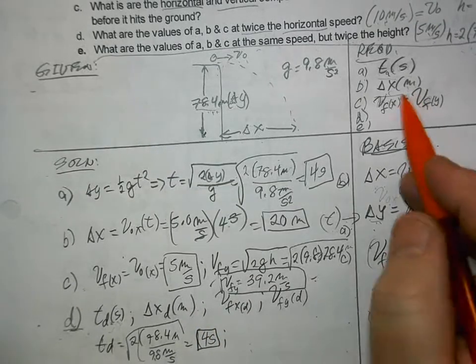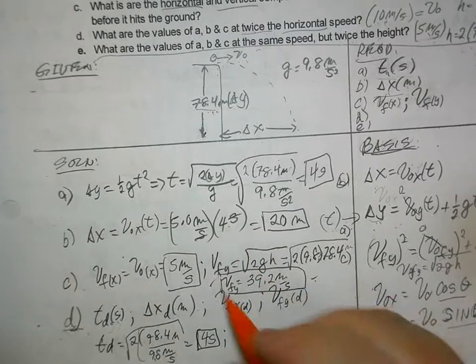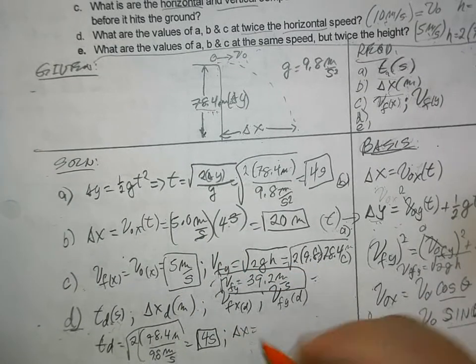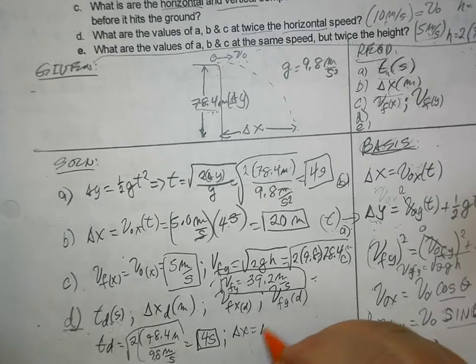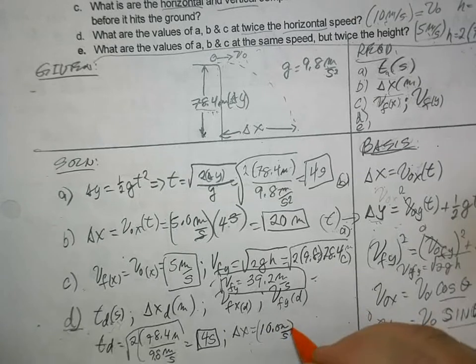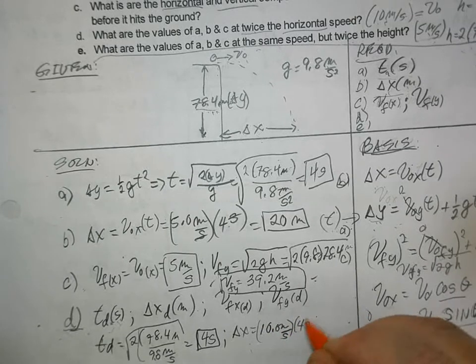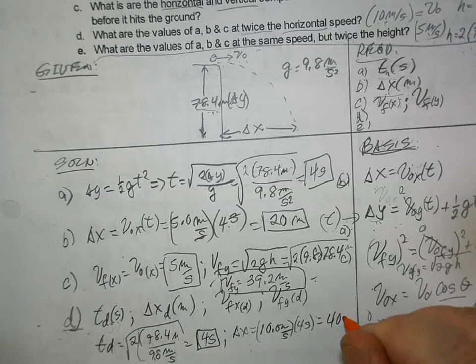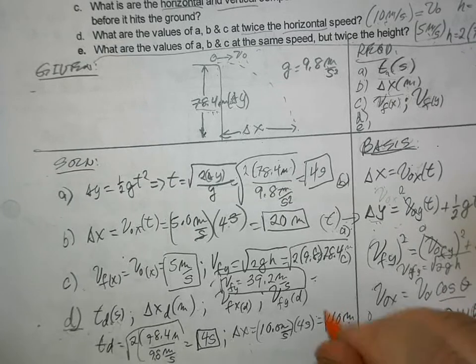How about the second one? Delta x. This changes. So this is now delta x is 10 meters per second times 4 seconds. And this is now 40 meters. So that changed.